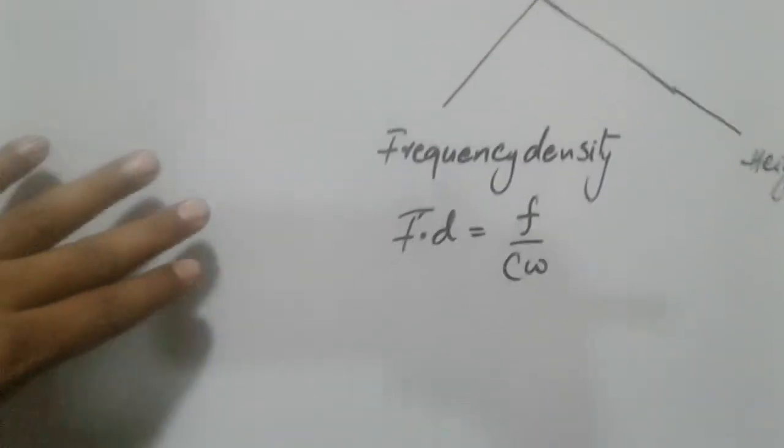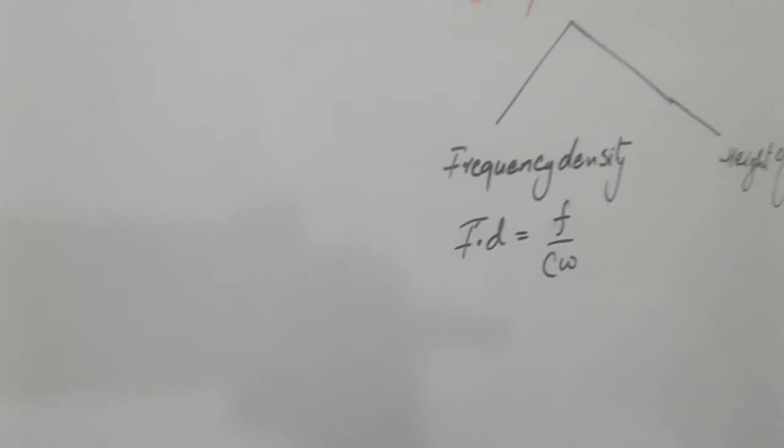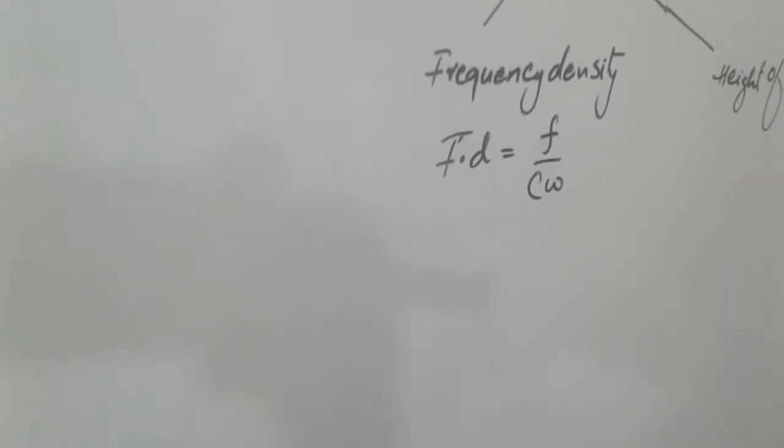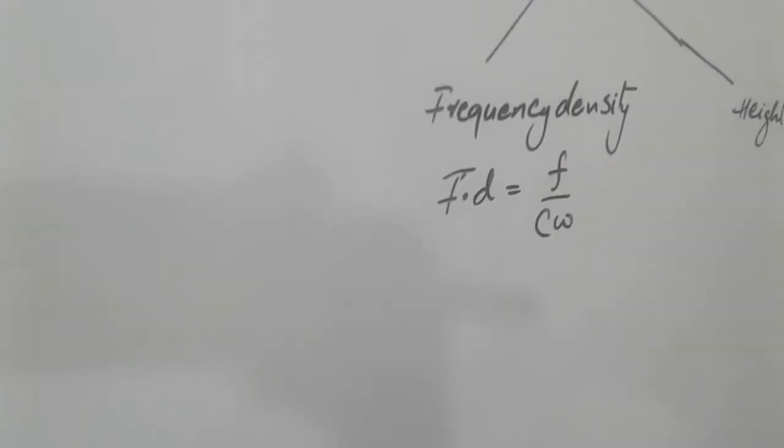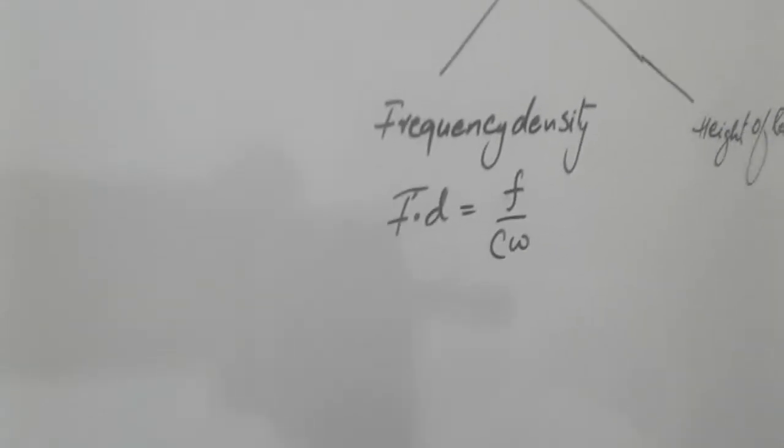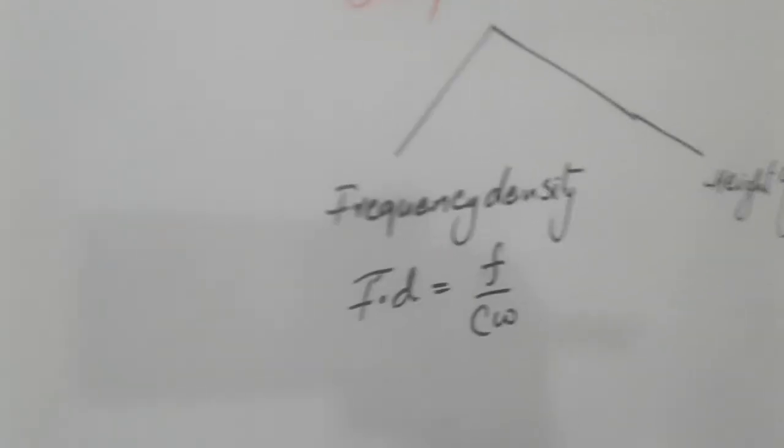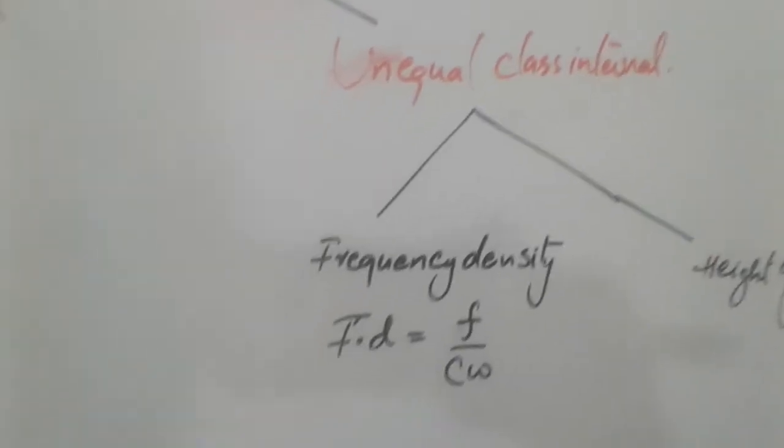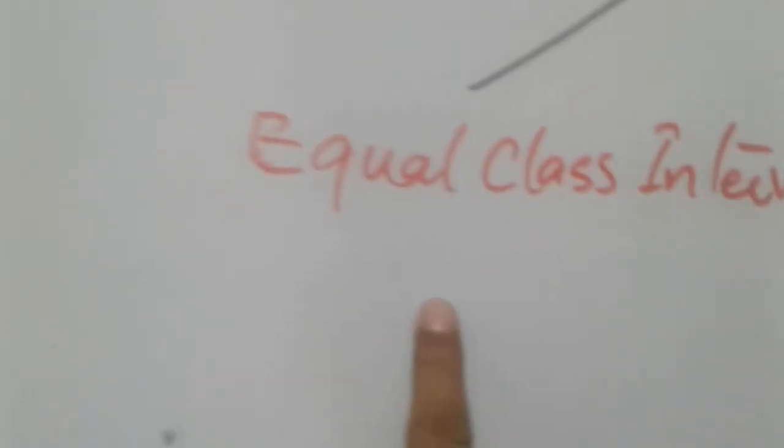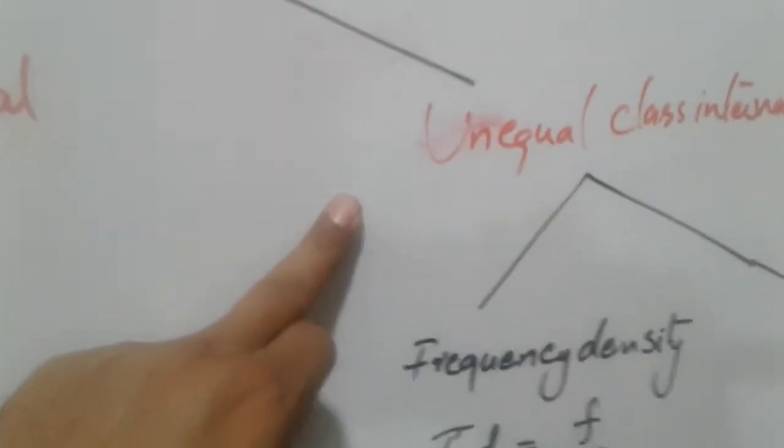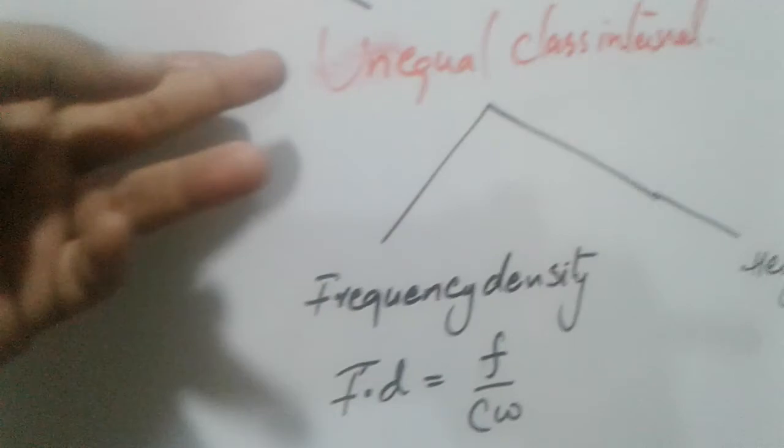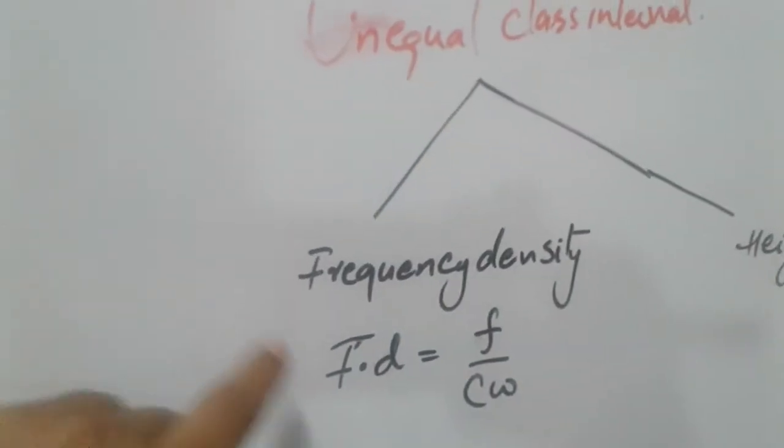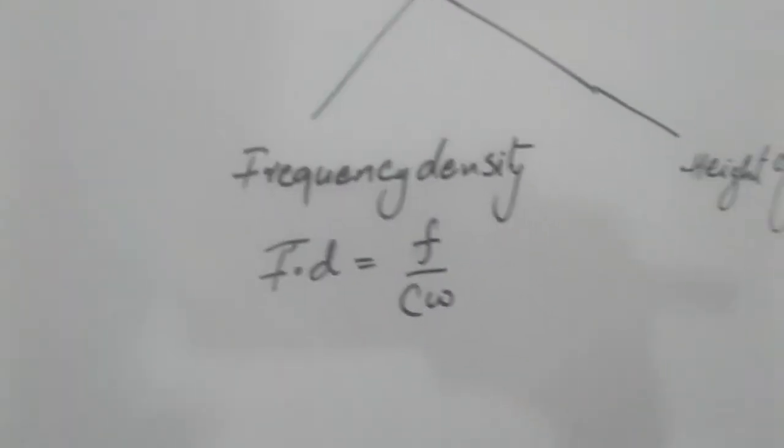Frequency density when you have histogram drawn. We have histogram to draw and we have frequency. So first of all when you have to draw, then first of all we have to check that it is equal class interval or unequal class interval. If it is unequal class interval then we apply frequency density.